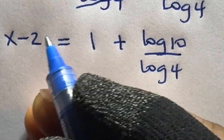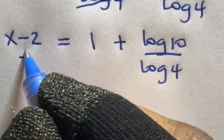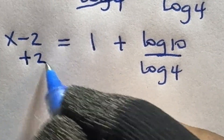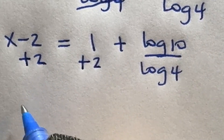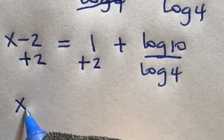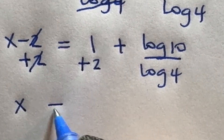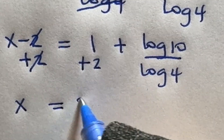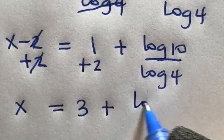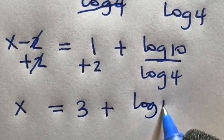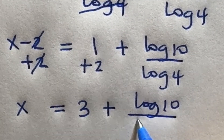I'm going to add 2 to both sides, so x will then be 3 plus log 10 divided by log 4.